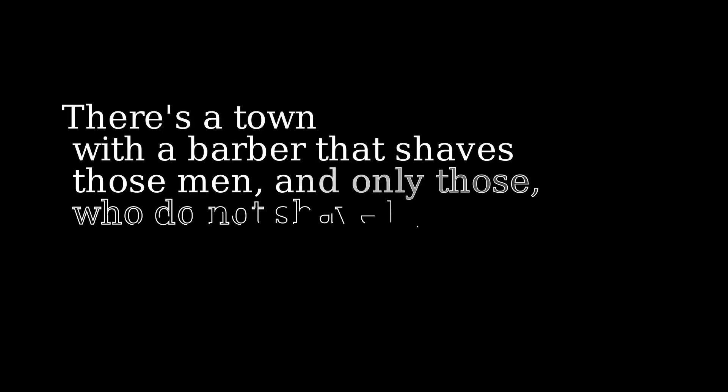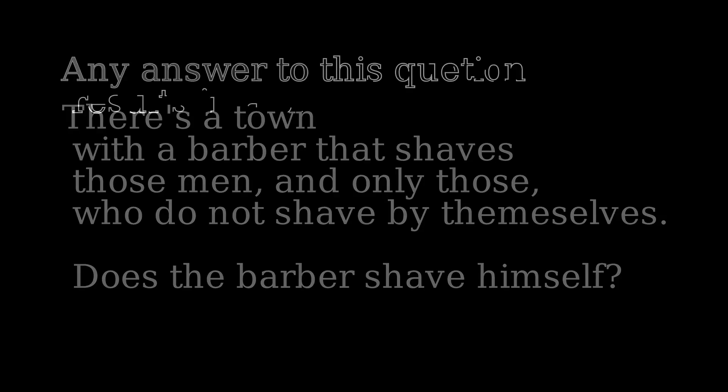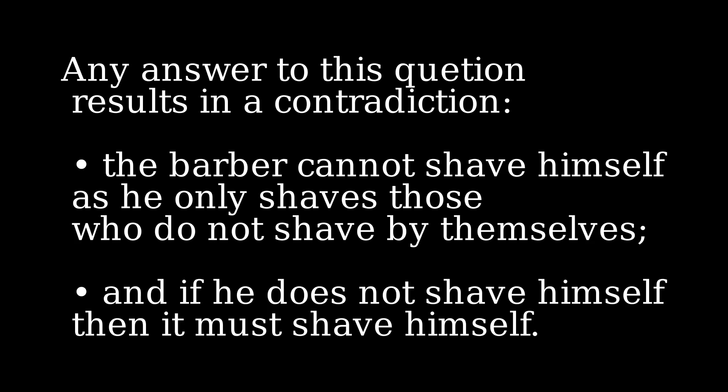I'm going to show you how mathematicians solved this situation. But first, let me tell you about the Barber's Paradox, which is somewhat similar to Russell's Paradox and will help us understand the solution. The Barber's Paradox goes like this: there's a town with a barber who shaves those men, and only those men, who do not shave themselves. Does the barber shave himself? Any answer results in a contradiction — the barber cannot shave himself since he only shaves those who don't shave themselves, but if he doesn't shave himself, according to the rule he must. The solution: the barber is a woman, or a gorilla, or a kid, or a robot — whatever you want — as long as the barber is not a man.